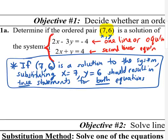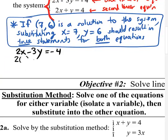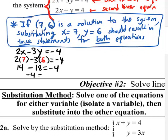I'll start with the top equation: 2x minus 3y equals negative 4. We replace x with 7 and y with 6. If I simplify, 2 times 7 is 14, minus 3 times 6 is 18. So 14 minus 18 is negative 4. That's true.